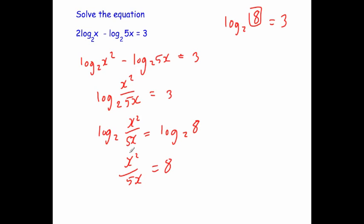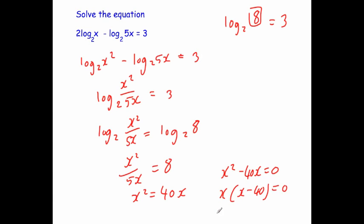Drop the logs from both sides: x squared over 5x equals 8. Multiply through to get x squared equals 40x, bringing it over gives x squared minus 40x equals 0. Factorizing gives x equals 0 or x equals 40. Since we can't take the log of 0, that solution is rejected, and the final answer is x equals 40.